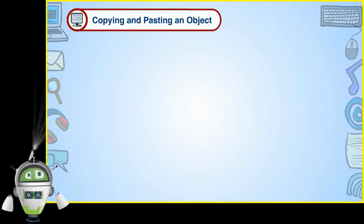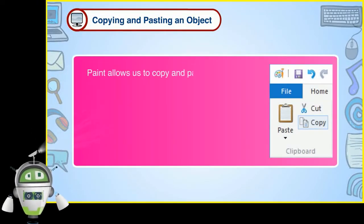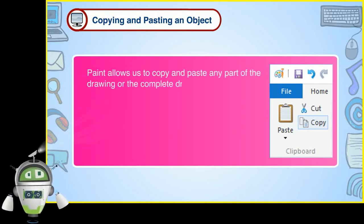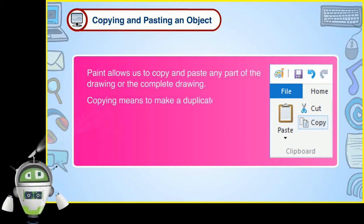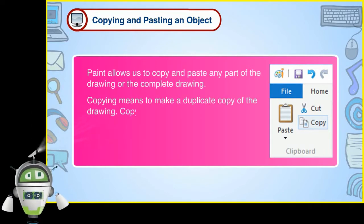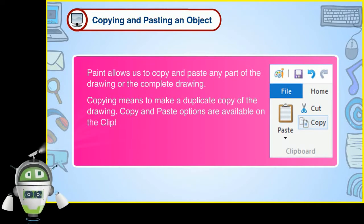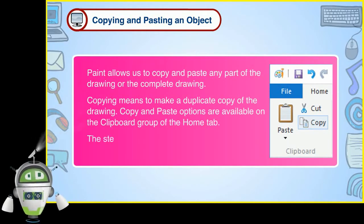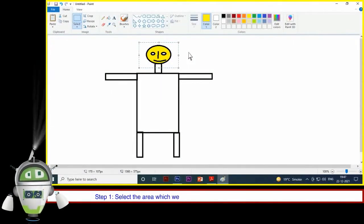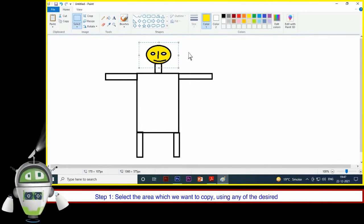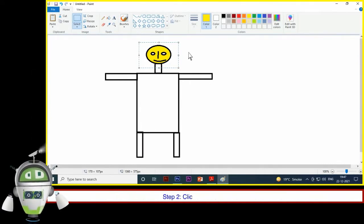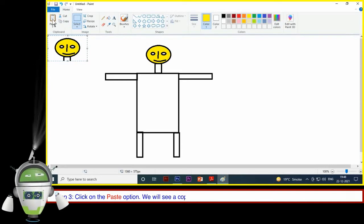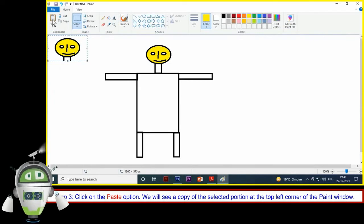Copying and Pasting an Object: Paint allows us to copy and paste any part of the drawing or the complete drawing. Copying means to make a duplicate copy of the drawing. Copy and Paste options are available on the Clipboard group of the Home tab. Step 1: Select the area which we want to copy using any of the desired selection tools. Step 2: Click on the Copy option. Step 3: Click on the Paste option. We will see a copy of the selected portion at the top left corner of the Paint window. Drag it to the required place.